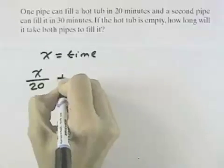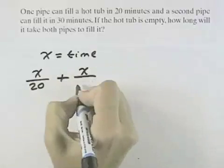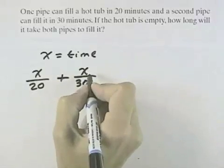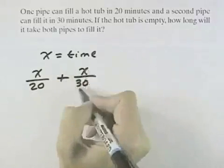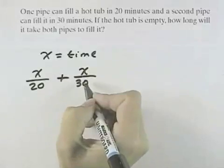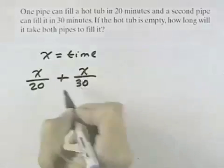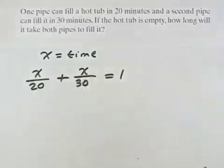However, we have a second pipe coming through, and the second pipe fills it in X over 30, where X is the number of minutes, and if X were 30, then the second pipe would fill it alone in that amount of time. We're adding both of these pipes filling at the same time to fill one hot tub.